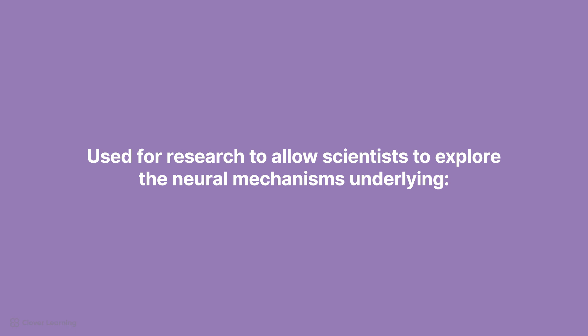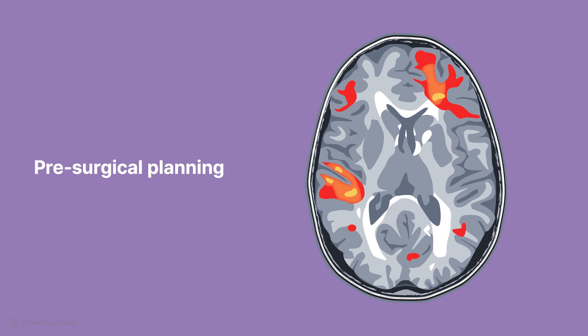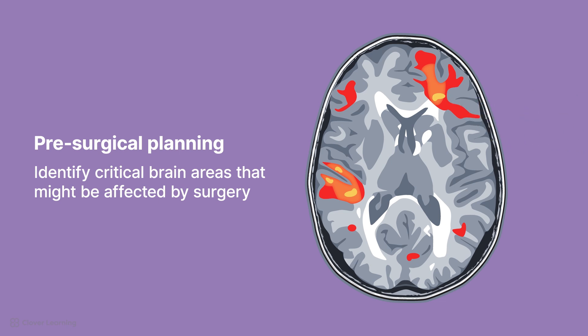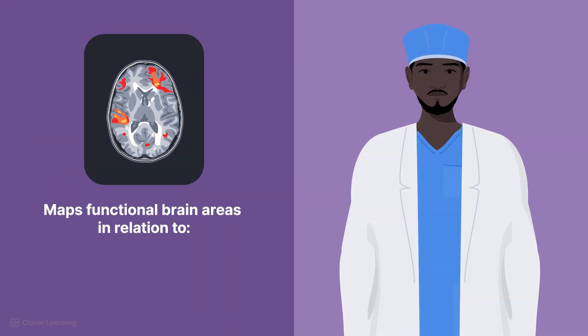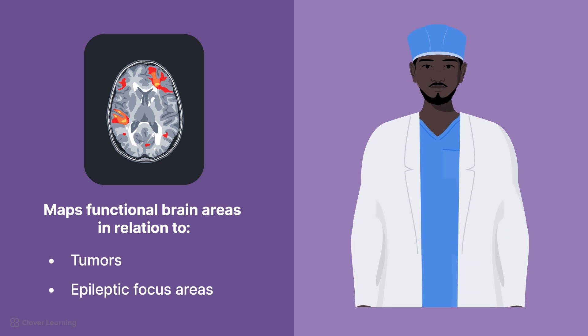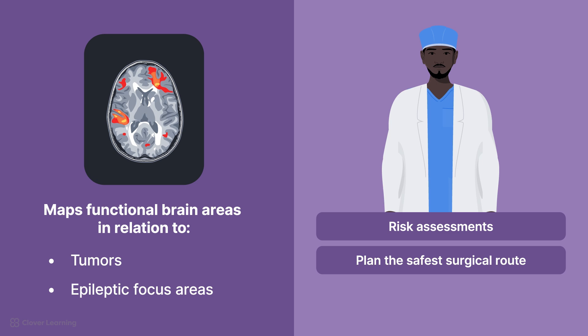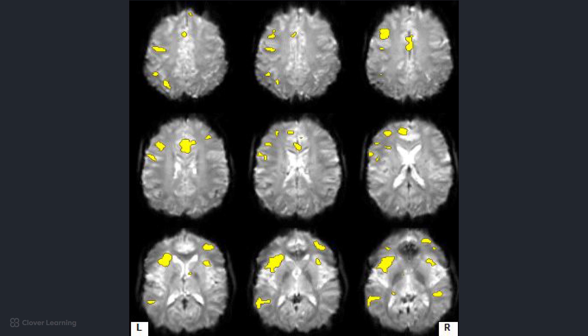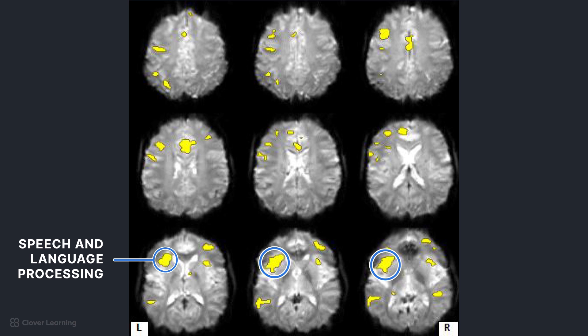Typically, fMRI is used for research, allowing scientists to explore the neural mechanisms underlying cognition, behavior, and emotions. Clinically, fMRI can be used for pre-surgical planning, allowing surgeons to identify critical brain areas that might be affected by surgery. fMRI can map functional brain areas in relation to tumors or epileptic focus areas, which means surgeons can perform risk assessments and plan the safest surgical route to prevent post-operative deficits. For example, if a tumor is located near areas responsible for speech and language processing, fMRI pre-surgical mapping can help surgeons avoid damage to those areas.